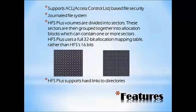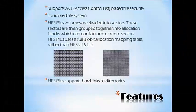HFS Plus uses a full 32-bit allocation mapping table, compared to HFS which uses 16-bit. In the figure, on the right-hand side we have HFS Plus allocation blocks and on the left side we have HFS allocation blocks. The comparison shows that HFS Plus has a larger number of allocation blocks, making it more significant. HFS Plus also supports hard links to directories.